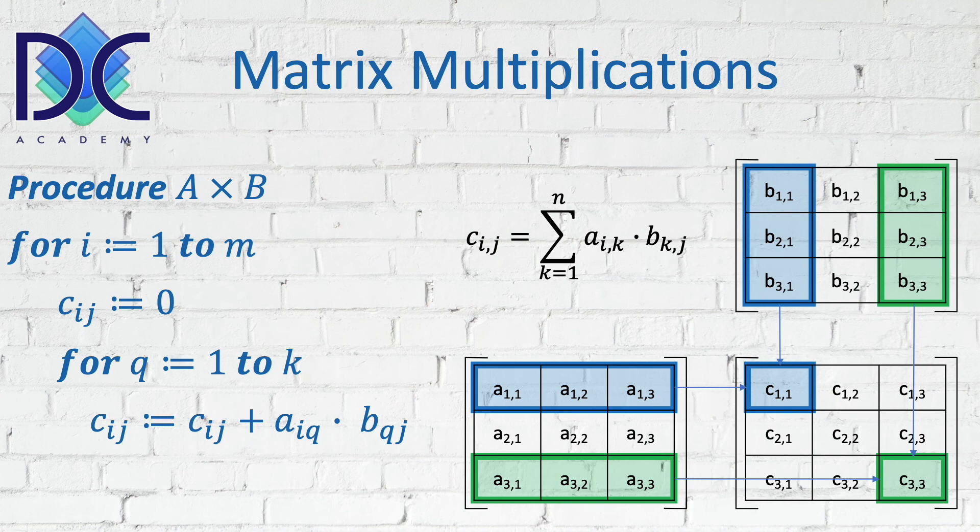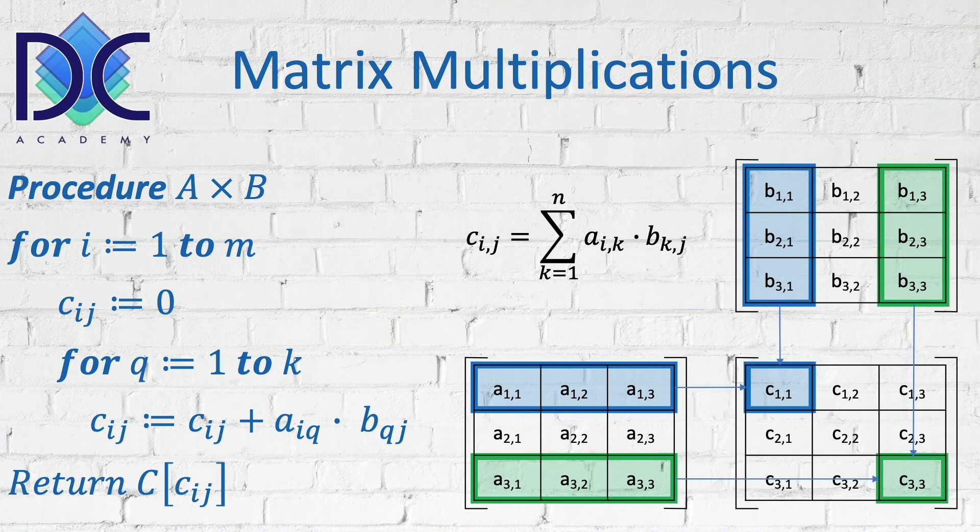And finally, we add to this number A13 times B31, and that gives us the first element of our new matrix. Then we return for all of them the indexes or the elements of that matrix.